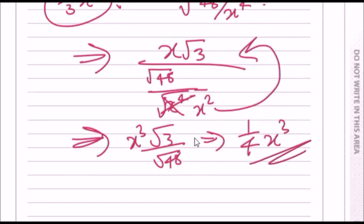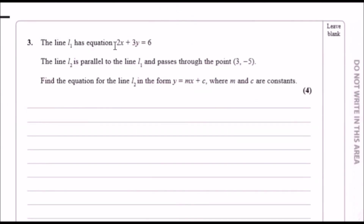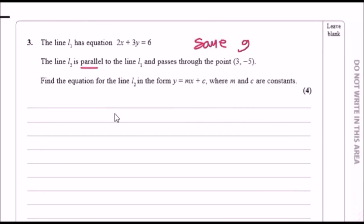Line L1 has a given linear equation, and line L2 is parallel to L1 and passes through a given point. We need to find the equation for L2 in the form y equals mx plus c. When two lines are parallel, they have the same gradient — the same m value.